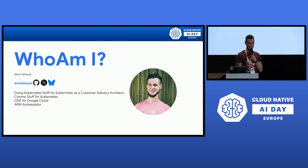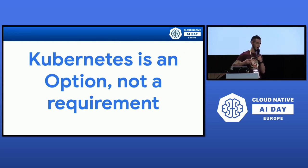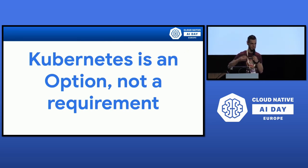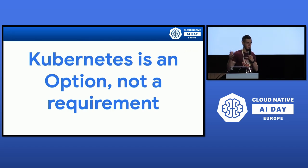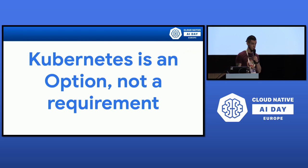When we talk about AI and AI workloads, it's always hard to know where to run them. Where do you train your models? Where do you apply your requirements? Where do you have a platform to run this? Kubernetes is an option to run AI and to train AI models, but it's not a requirement.